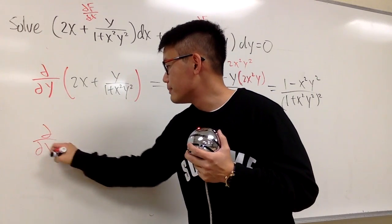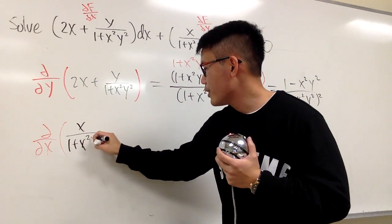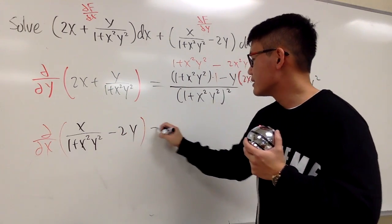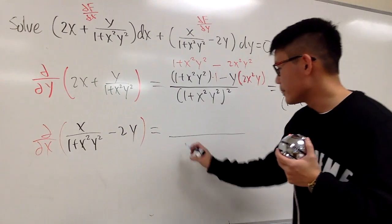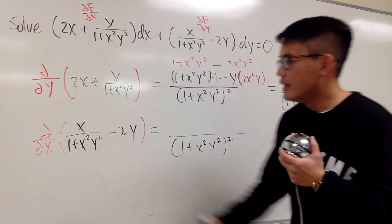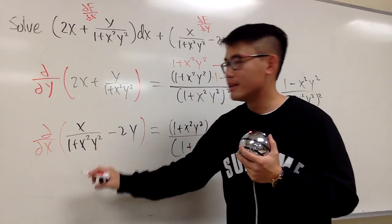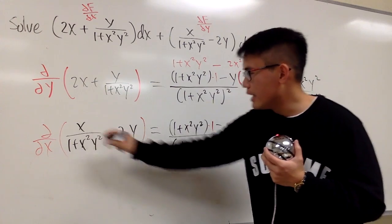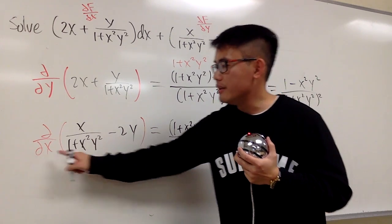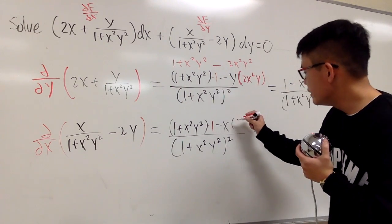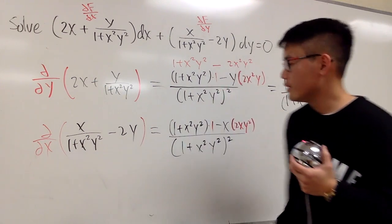Now let's compute the partial with respect to x of the second term: x / (1 + x²y²) minus 2y. For the first part we use the quotient rule. Square the denominator: (1 + x²y²)². Keep the bottom (1 + x²y²) and multiply by the derivative of x, which is 1. Then subtract: keep the x, and multiply by the derivative of the bottom. In the x world, the derivative of (1 + x²y²) gives 2xy². The derivative of negative 2y with respect to x is 0.